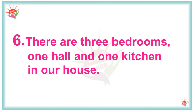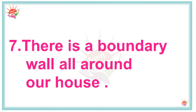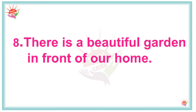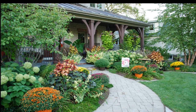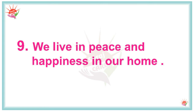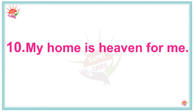It is a small pukka house. There are three bedrooms, one hall, and one kitchen in our house. There is a boundary wall all around our house. There is a beautiful garden in front of our home. We live in peace and happiness in our home. My home is heaven for me.